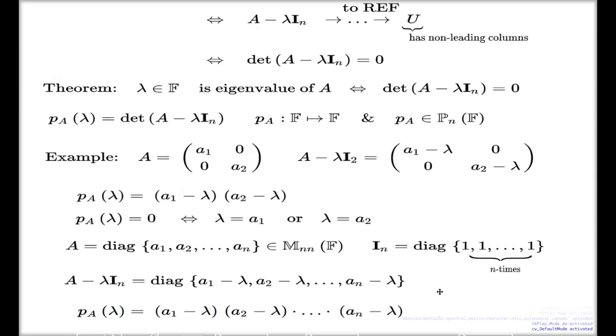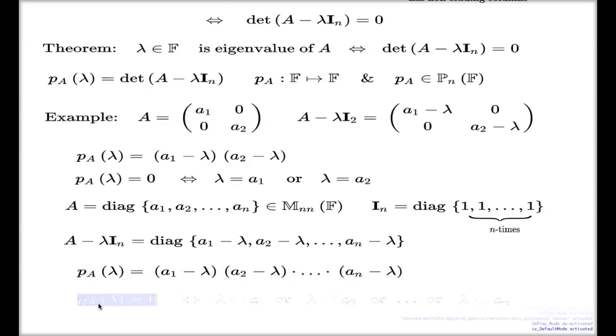We can now say that my characteristic polynomial vanishes if and only if my lambda takes one of the diagonal values, either lambda A1 or A2 or many others like this, the last one will be AN. The same set of eigenvalues we guessed before we recovered analytically.